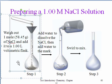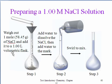So we measure 58.45 grams on the scale, and then we add it to a flask that can hold one liter. And this type of flask is what's known as a volumetric flask. It has one line in the flask where it is exactly one liter.